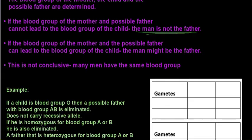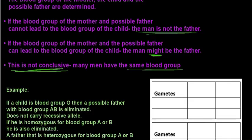But if the blood group of the mother and the possible father can lead to the blood group of the child — very important — the man might be the father; he could be a possible father. The reason for that is that blood grouping is not conclusive, because many men have the same blood group. So it is like a quick elimination test, but it is not conclusive. If they want to further their inquiry, a DNA profile should be done.